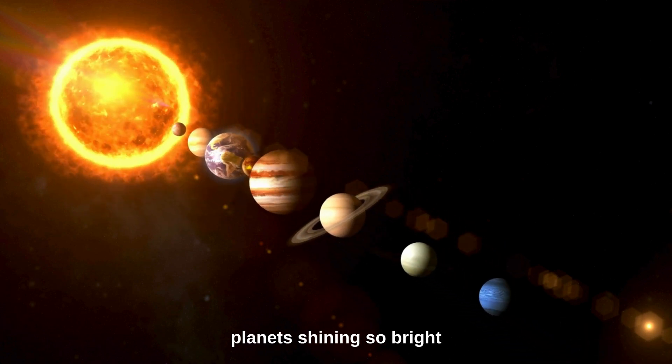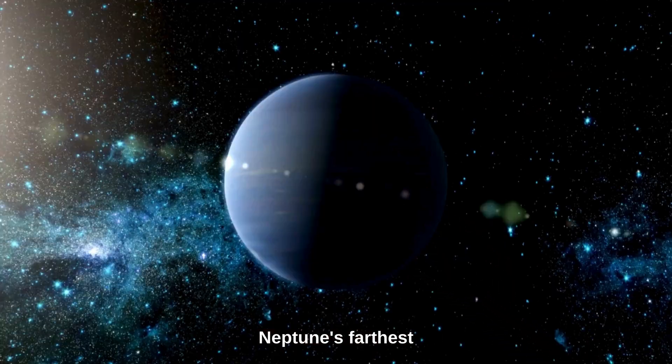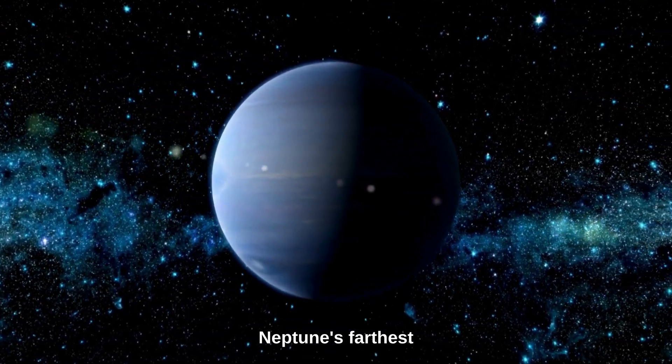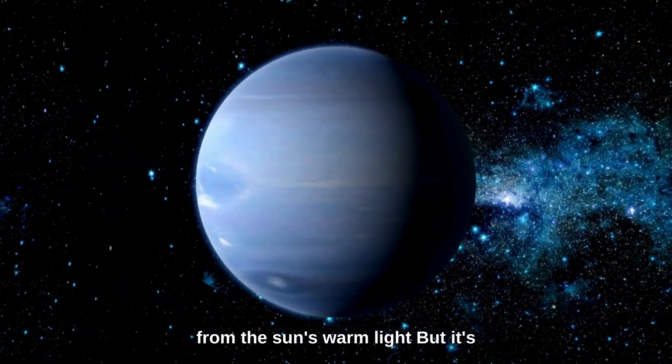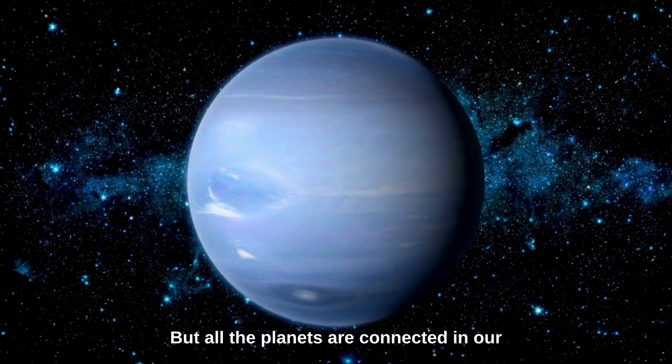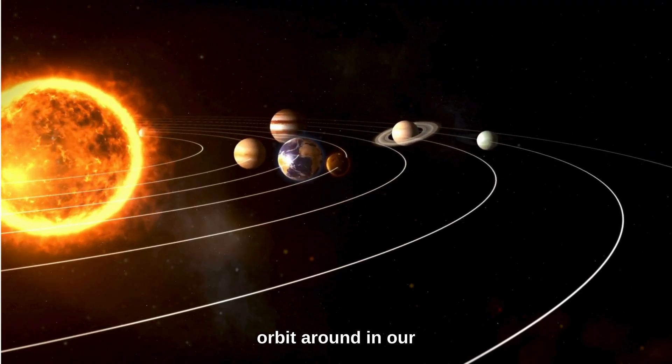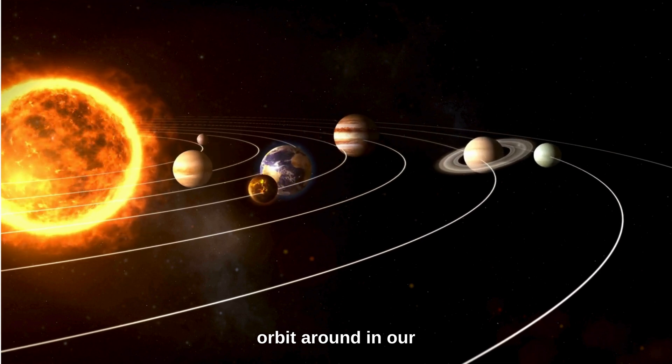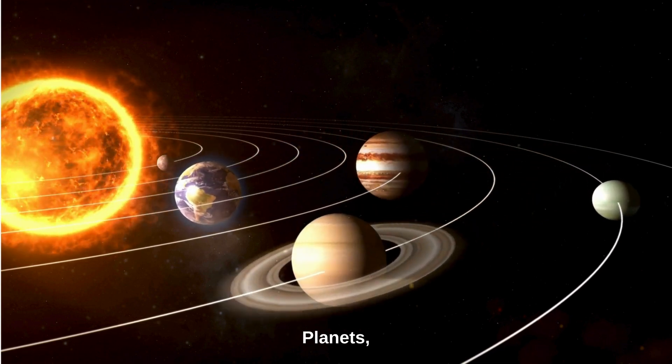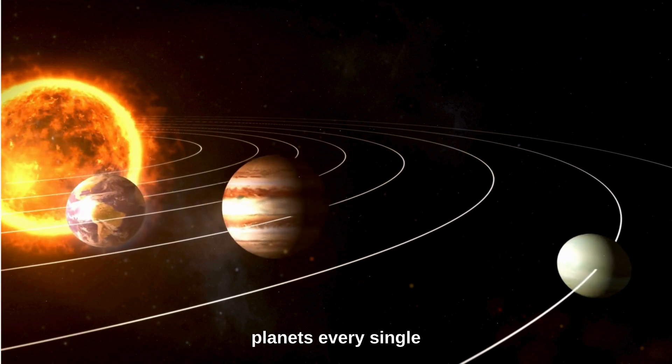planets shining so bright. Neptune's farthest from the sun's warm light. But all the planets are connected in our sight. They orbit around in our solar system's way. Planets, planets,